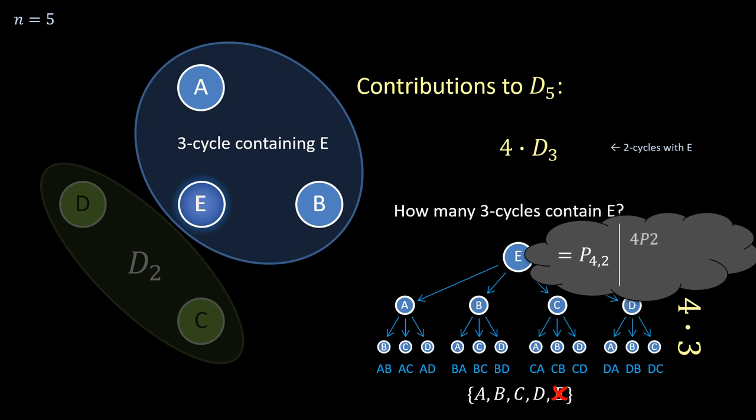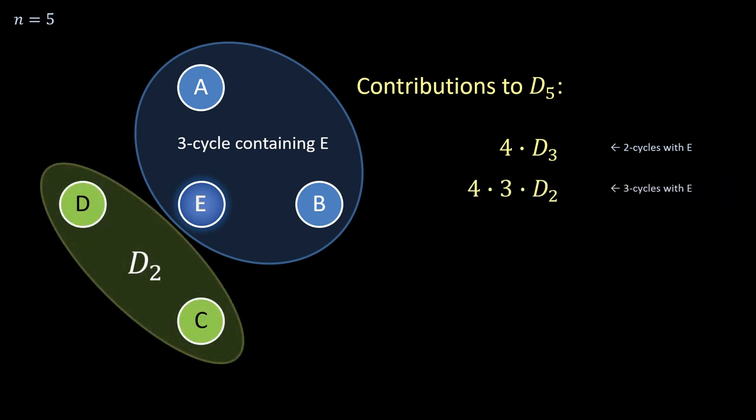An alternative notation for this is 4P2, for permute 2. So three cycles with e contribute four times three times D_2 to the derangement count for n is five, D_2 being the number of possible derangements of the remaining two elements, which is actually one.